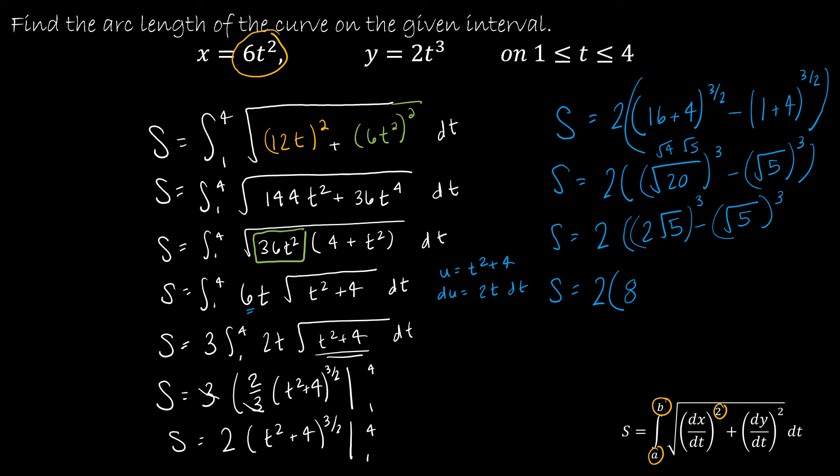And then √5 cubed would give me 5√5. So essentially what I have is still 2 on the outside. And I have 40√5 here minus 5√5.